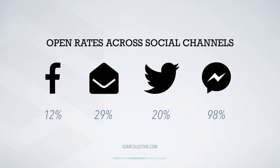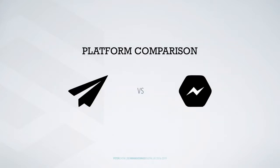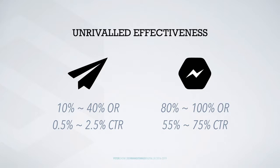But what happens if you're on another platform? For instance, Messenger — without doing anything really different, just by being on a different platform, you increase your open rate to 98%. Isn't that powerful? And imagine if you're using both — 29% on one side, 98% on the other — that increases your communication way, way more. Messenger platform has always been compared with email marketing.